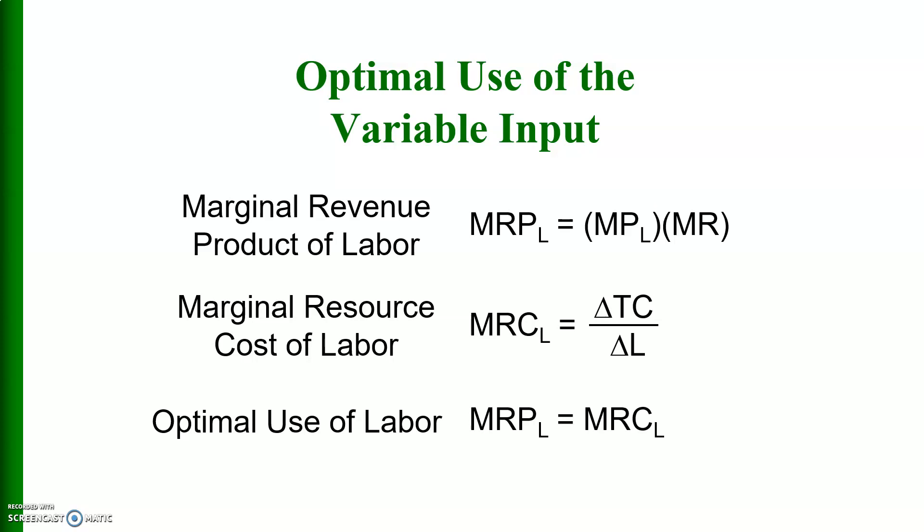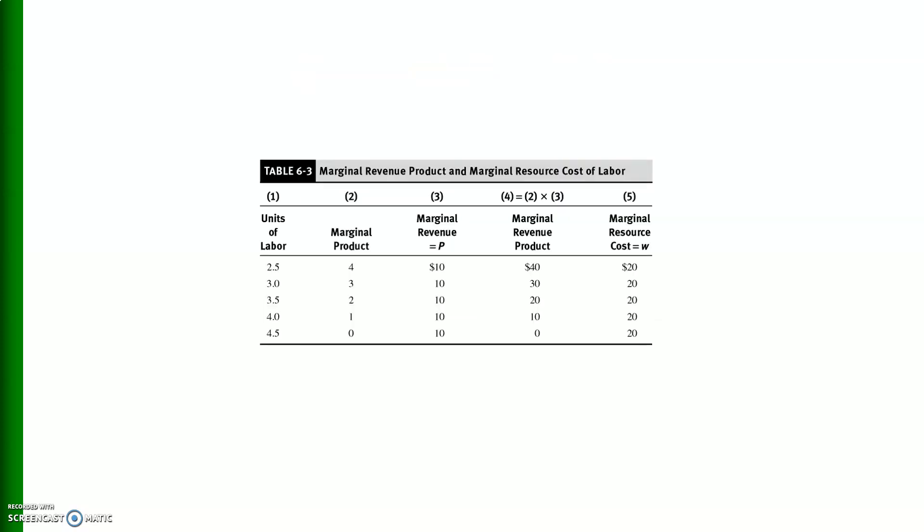To optimally use the labor input, we need to know the marginal revenue product of labor, which equals marginal product of labor times marginal revenue, and the marginal resource cost of labor, which equals the wage. For optimal use, the marginal revenue product of labor must equal the marginal resource cost of labor. In this diagram, at 3.5 units of labor, marginal revenue product and marginal resource cost — the wage — are equal to each other.